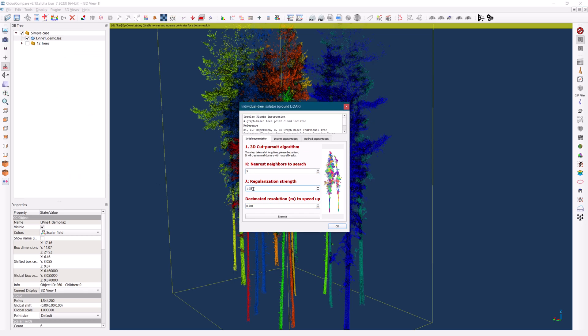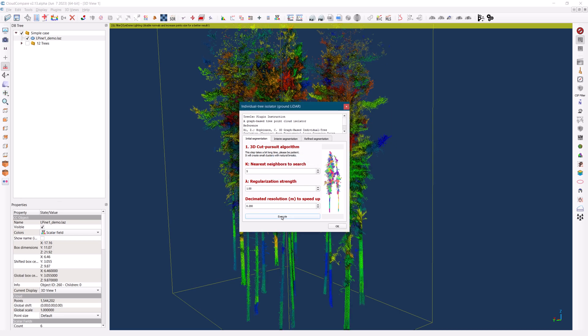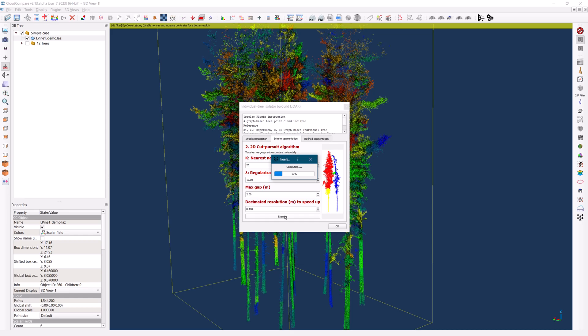To address this, we will re-run the process with an adjustment to the regularization strength in the second step. This modification will prevent the merging of these smaller segments.